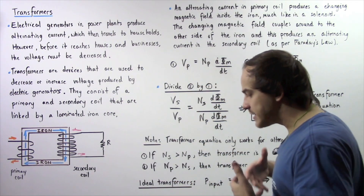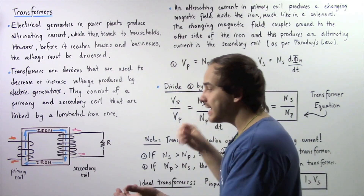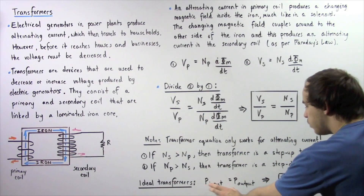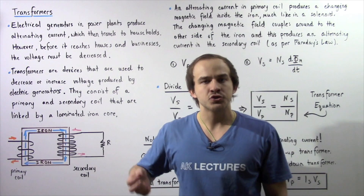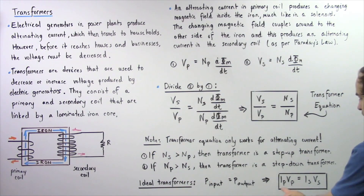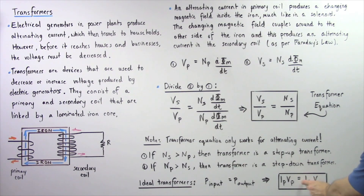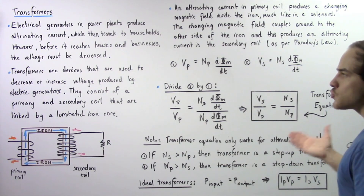Inside an ideal transformer, the amount of power inputted equals the amount of power outputted: power input equals power output. Because power equals the product of electric current and voltage, the electric current in the primary coil multiplied by the voltage in the primary coil equals the electric current in the secondary coil multiplied by the voltage in the secondary coil. This is the power equation for transformers.